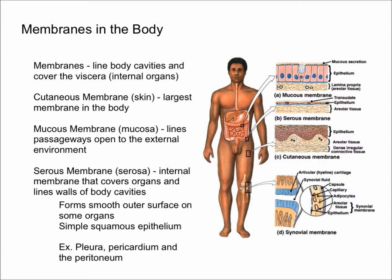Next, the mucous membrane, also known as the mucosa, lines passageways open to the external environment. You can see this in your digestive tract, your respiratory tract, your urinary and reproductive tract — essentially anywhere that's open to the outside environment. Mucous membranes are covered with mucus that traps bacteria and foreign particles, helping protect your body and preventing them from invading.